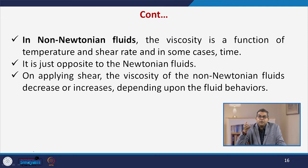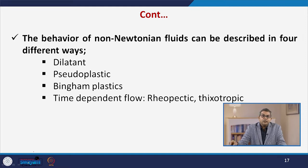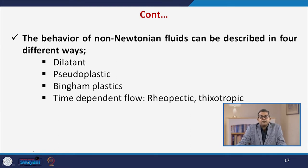In non-Newtonian fluids, the viscosity is a function of temperature, shear rate, and in some cases time — opposite to Newtonian fluids. On applying shear, the viscosity of a non-Newtonian fluid can decrease or increase depending on the fluid behavior. The behavior of non-Newtonian fluids can be described in four different ways: dilatant, pseudo-plastic, Bingham plastic, and time-dependent flow — rheopectic or thixotropic.